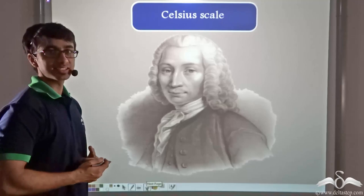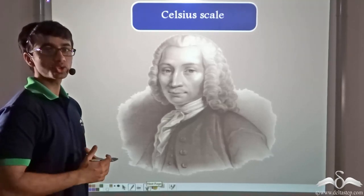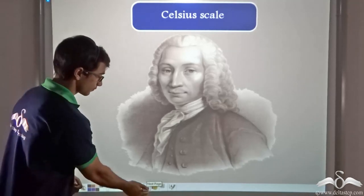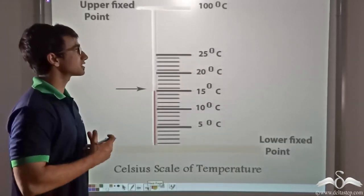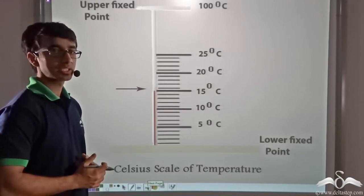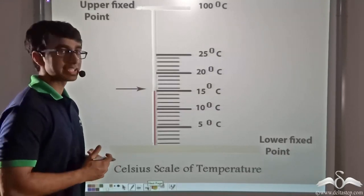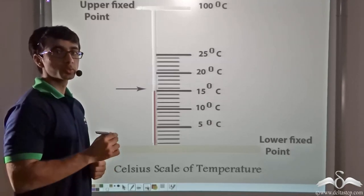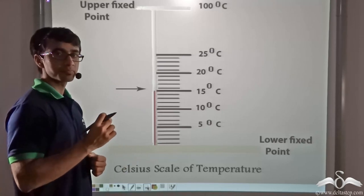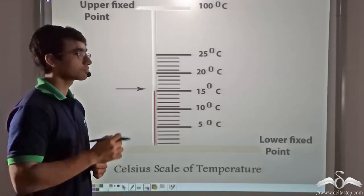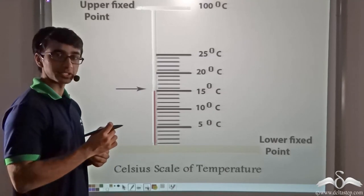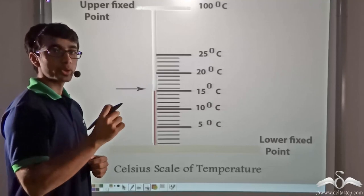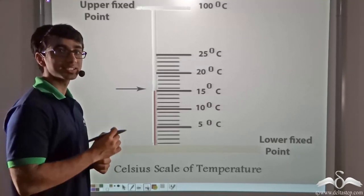The Celsius scale was invented and first used by the Swedish astronomer Anders Celsius. To grade a thermometer in the Celsius scale, the thermometer is first kept in a mixture of ice and water. The liquid inside the thermometer becomes fixed at a point known as the ice point, which is marked as zero degrees Celsius.